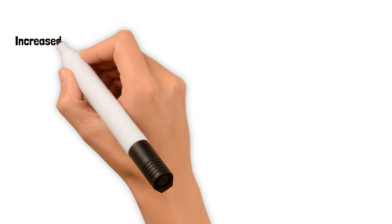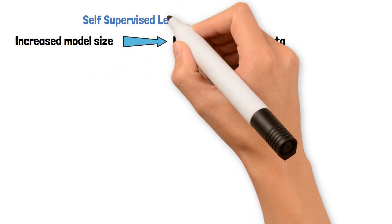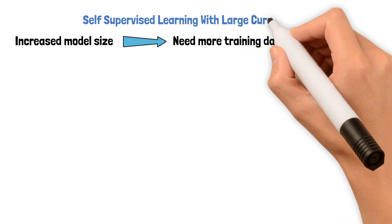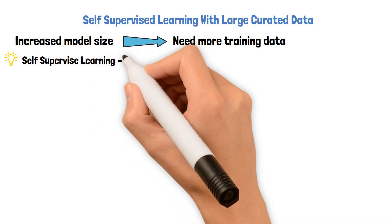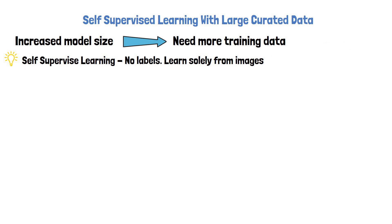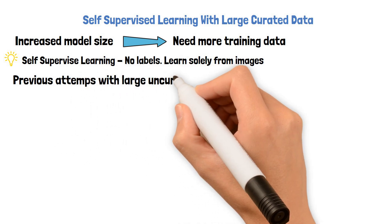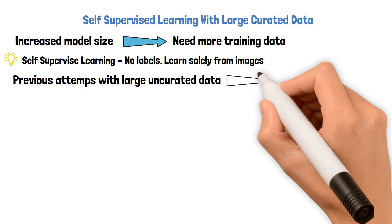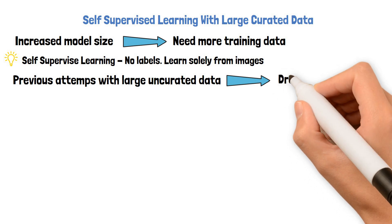With DynoV2, the model size was increased dramatically from the previous DINO version, which raised the need for more training data. This brings us to talk about self-supervised learning with large curated data. Self-supervised learning means the training data has no labels, and the model learns solely from the images. The first DINO version also used self-supervised learning techniques. Without data labeling, it should be easier to increase training data size. However, previous attempts to increase uncurated data size with self-supervised learning caused a drop in quality.